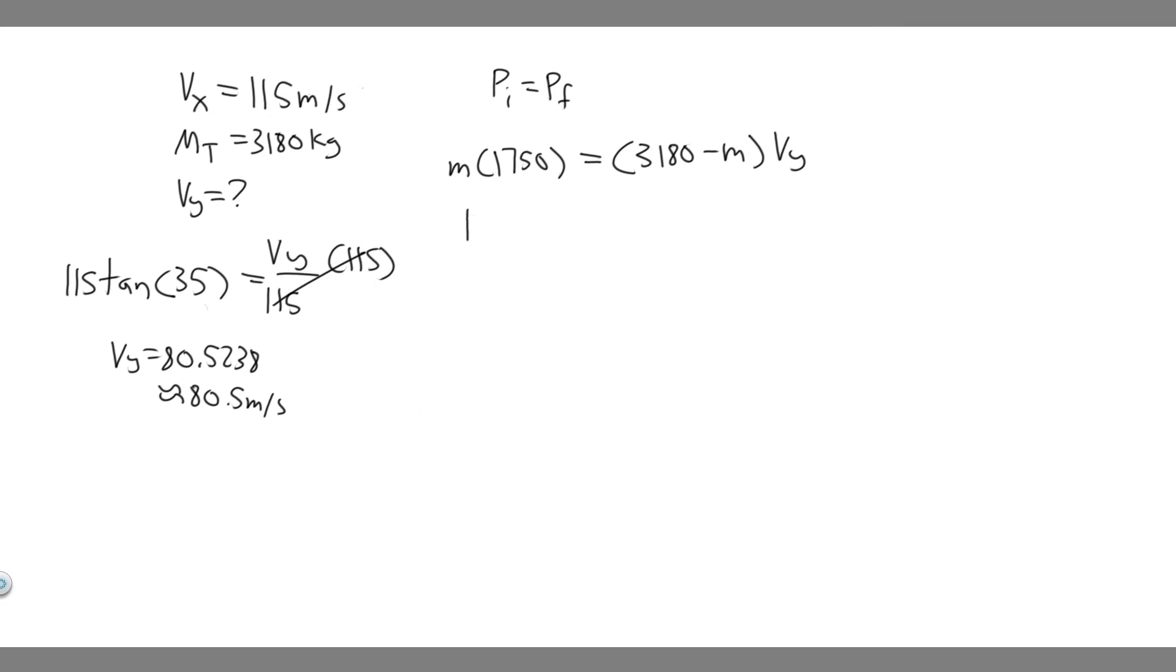So it's just 1750 m is equal to 3180 minus m. And then we're multiplying it by v sub y, which is 80.5. So we just got to multiply this out and solve for m now. So just multiply this out. So 3180 times 80.5.